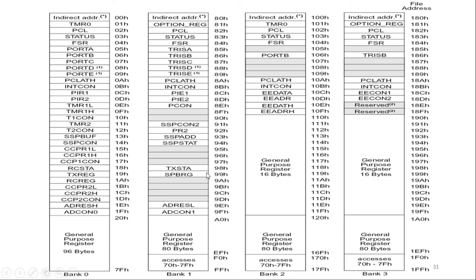One important note about the banks: addresses from 70h to 7Fh, which are present in bank 0, are accessible from all four banks. If you are currently working in bank 2 and try to access any address from 70h to 7Fh, that location is accessible without changing the bank. So these addresses are accessible from all four banks. This concludes the memory organization of PIC16F877. In the next video, we will see the concept of pipelining, which is used for improving the throughput of the system. Thank you.